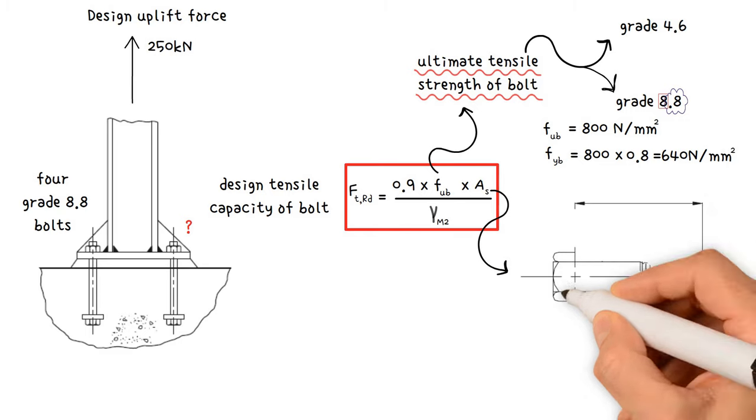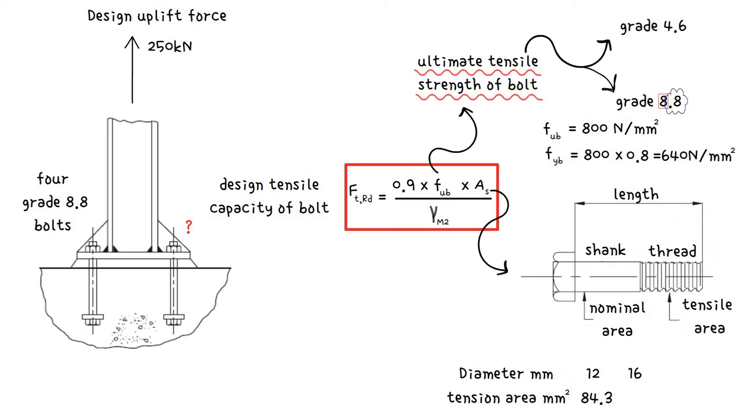AS is the bolt tension area. The tensile area represents the area of the bolt at the root of the threads, and so is less than the nominal area of the bolt shank. For commonly used sizes of standard metric bolts, the tension areas are given in this table.